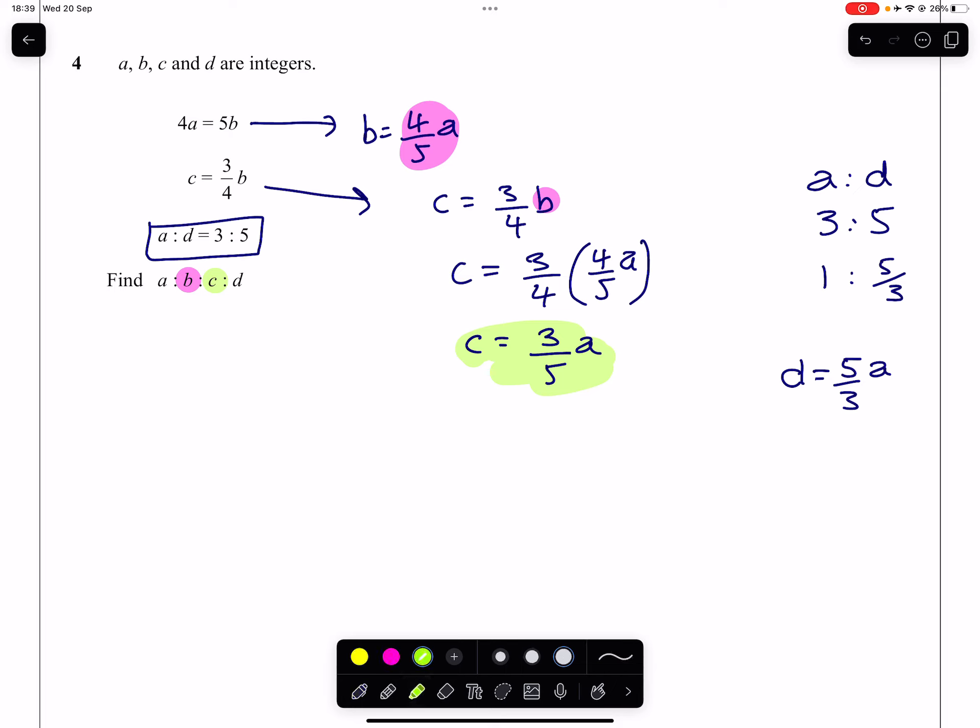And that gives us the last piece of this puzzle to sub in. So we have a single A on the left-hand side, we have four-fifths of A as the next part of our ratio, we have three-fifths of A as the next part of our ratio, and lastly, we have five-thirds of A in our ratio.